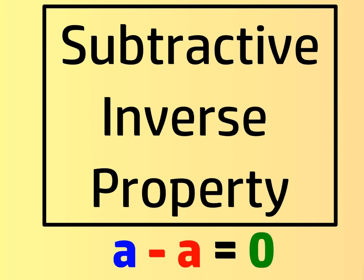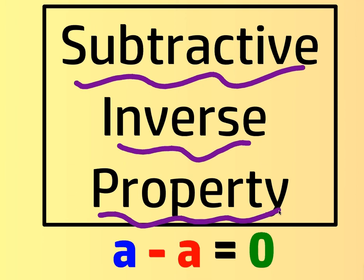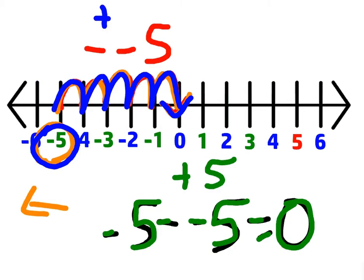I'm going to call this the subtractive inverse property — it is actually a word, I looked it up. Just like the additive inverse property, this is subtractive. The gist of this lesson is: if I start with a number A, what number must I subtract to end up at 0? You subtract the number itself, even if it's a negative number.